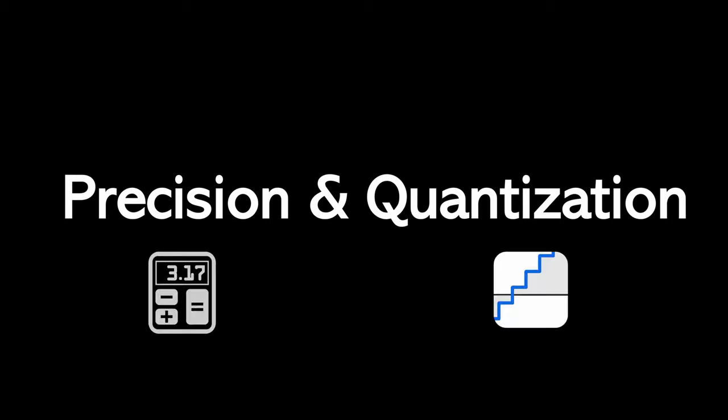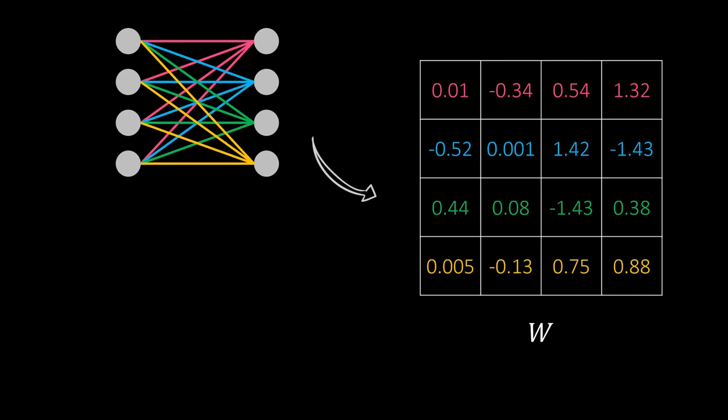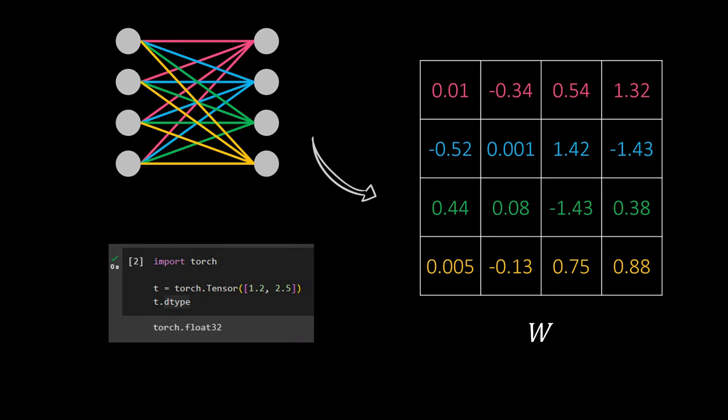To build some foundational knowledge in order to understand the following, let's quickly take a look at some concepts regarding precision and quantization. If you feel familiar with these topics, you can skip this part and jump right to the LoRa timestamp. The weight matrices in neural networks are made up of floating-point numbers. Not sure if you have ever realized this, but usually these values are stored in a Float32 data type. So what does this mean?